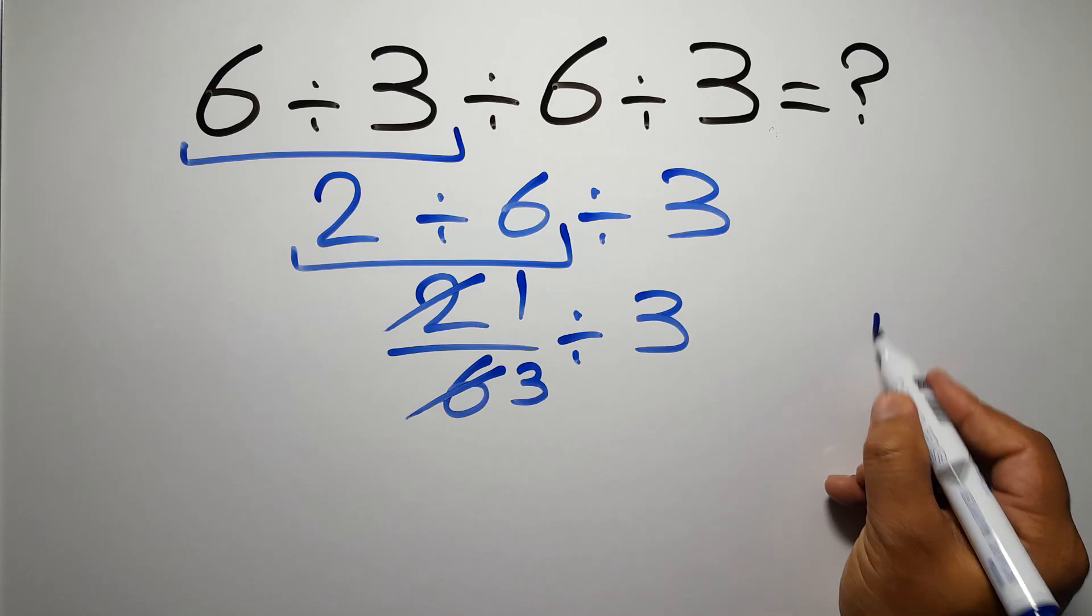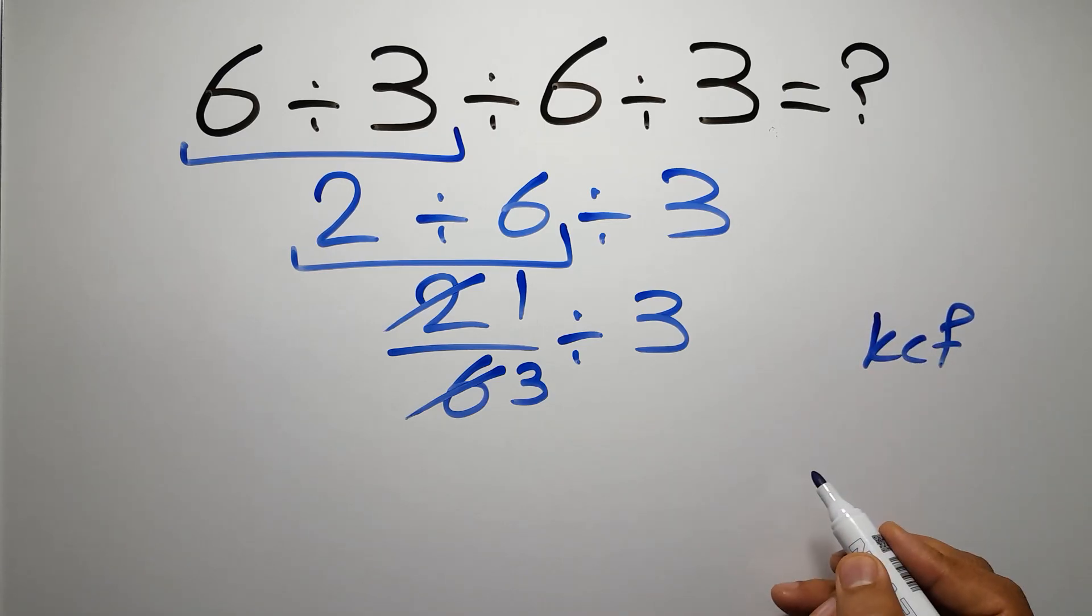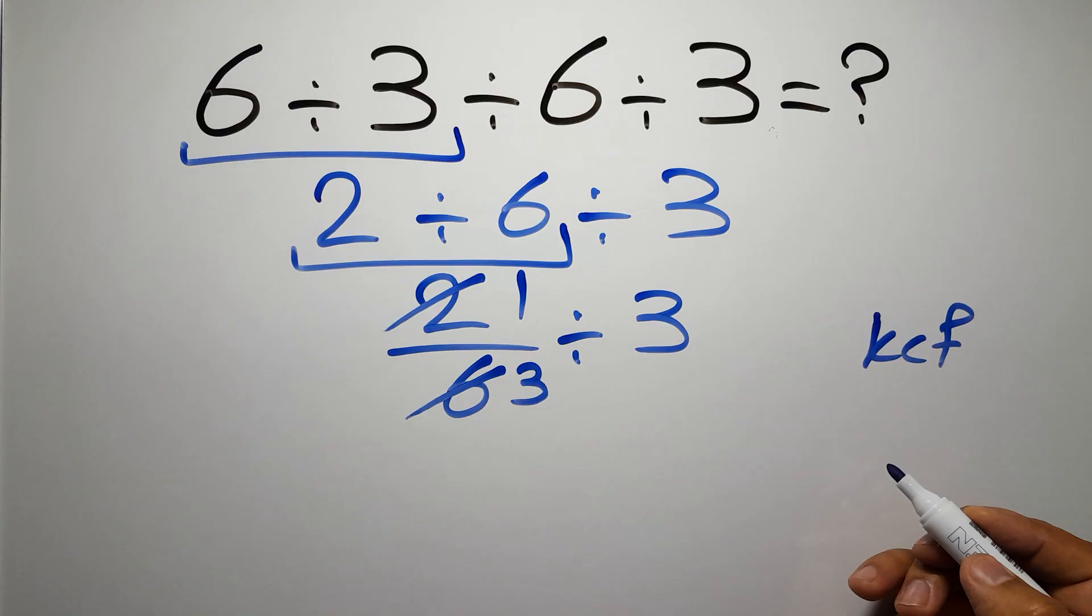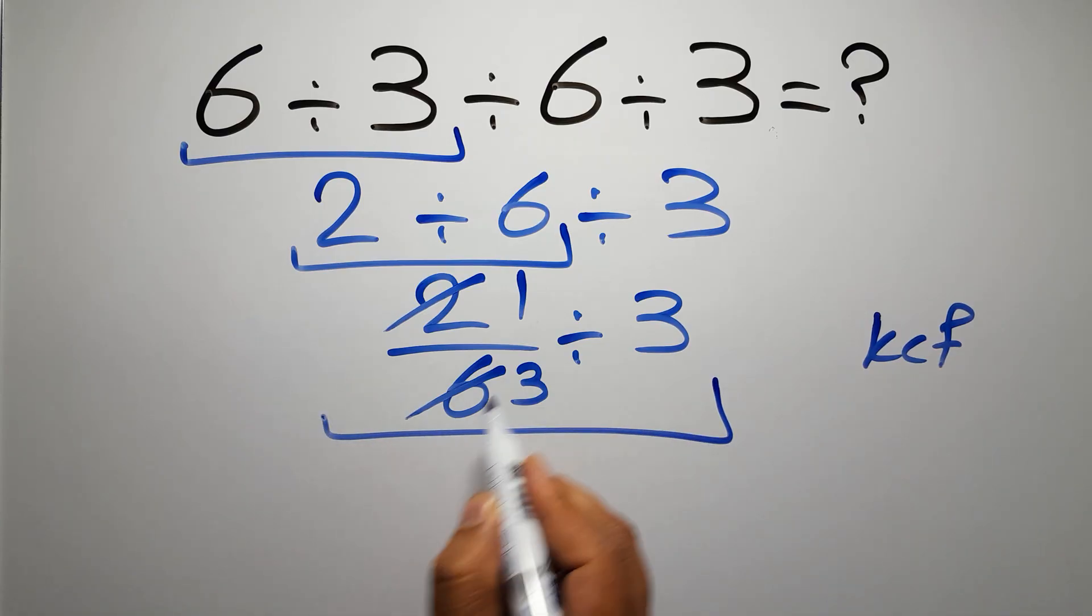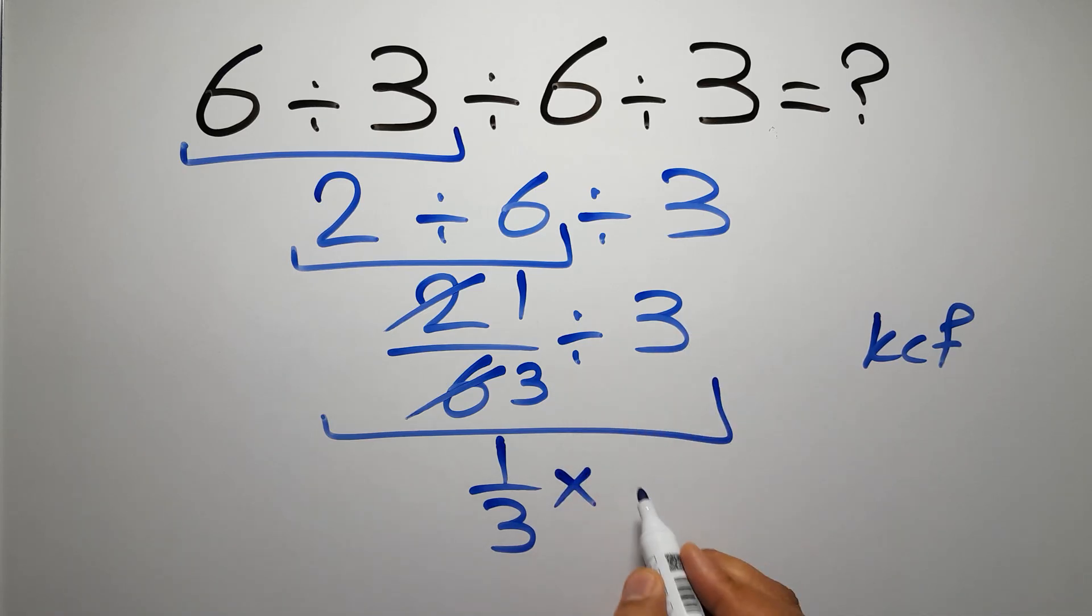According to the KCF rule, K stands for keep, C stands for change, and F stands for flip. We can write keep the first fraction, change division to multiplication, and flip the second fraction.